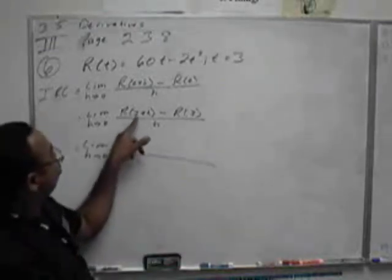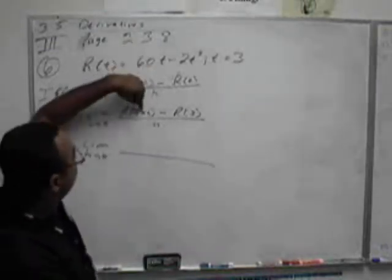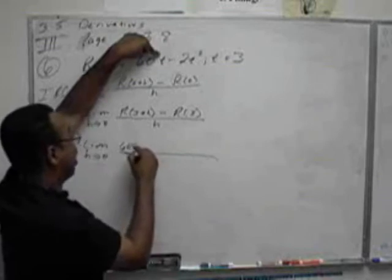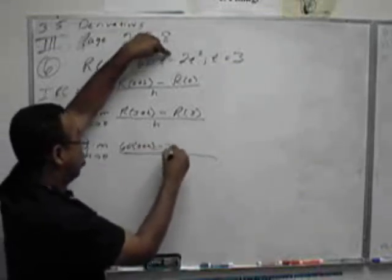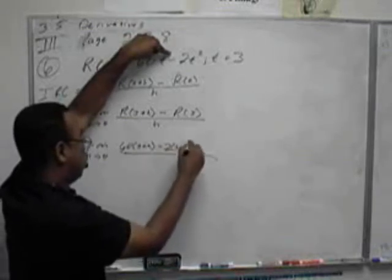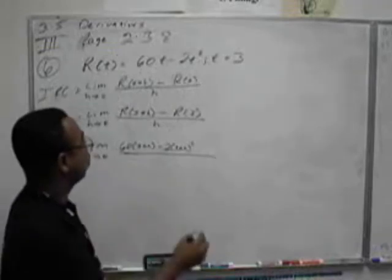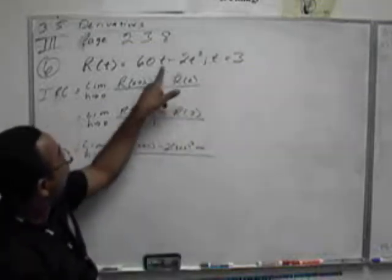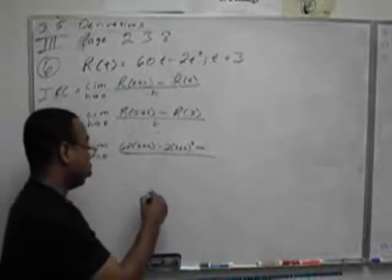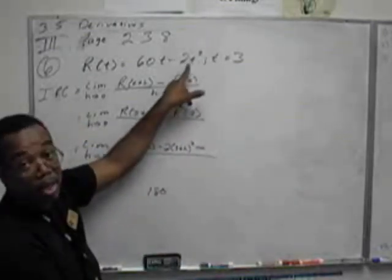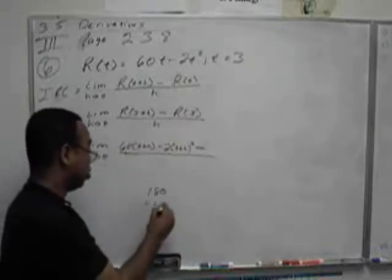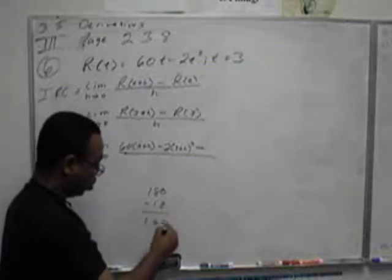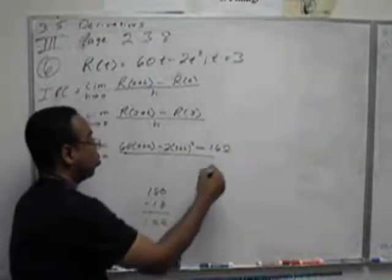So the function r with 3 plus h as an input, we put 3 plus h into t here. You'll get 60 times 3 plus h minus 2 times 3 plus h all squared, then minus. And what is the function r with 3 as an input? If I put 3 here, 3 times 60 is 180, and 3 squared is 9 times 2 is 18. So 180 minus 18 is 162, all over h.